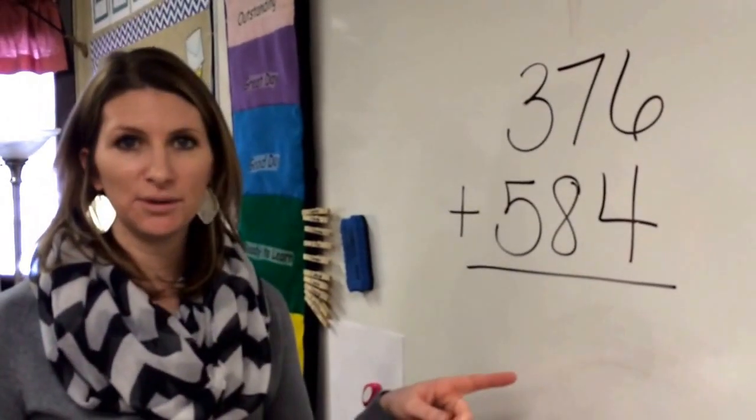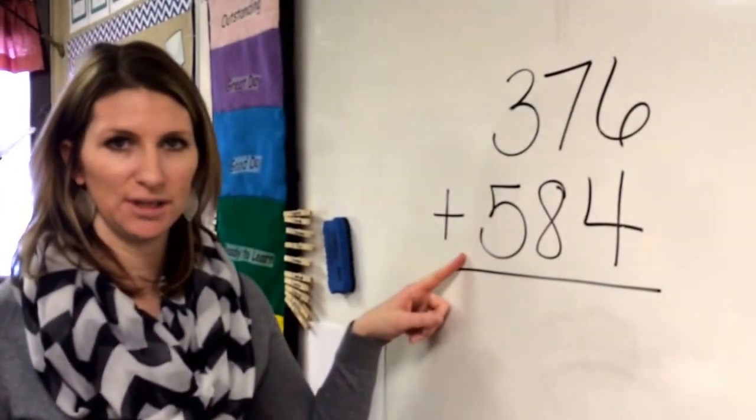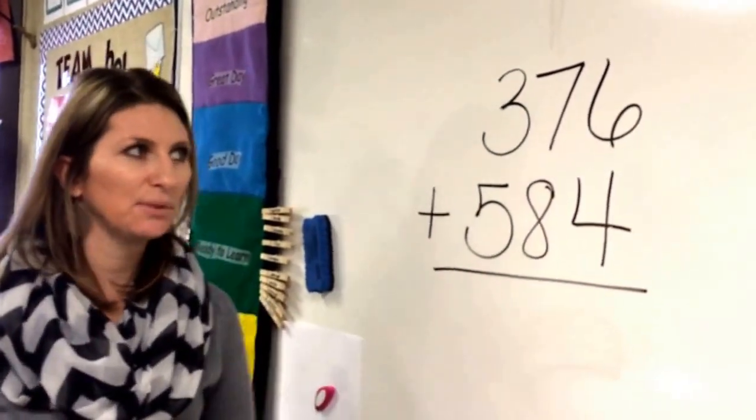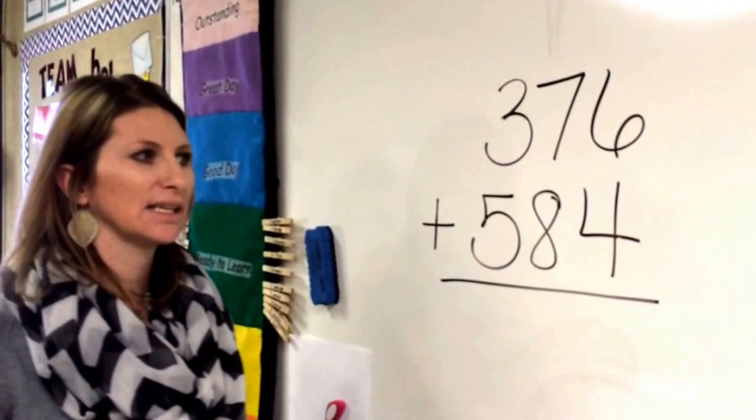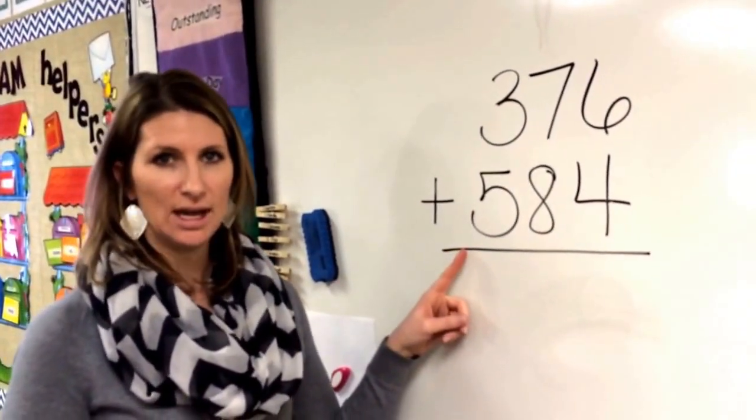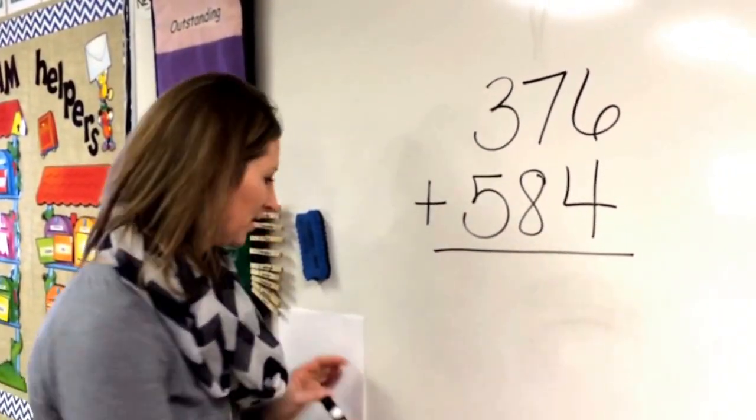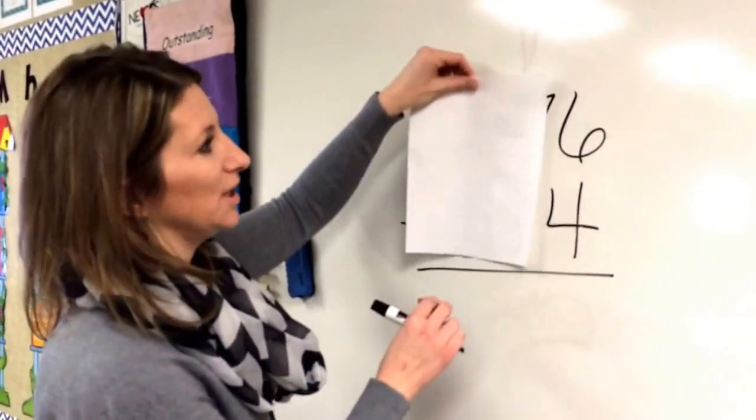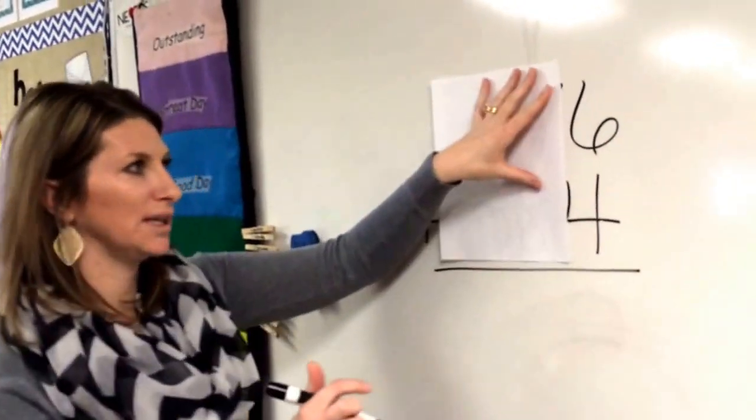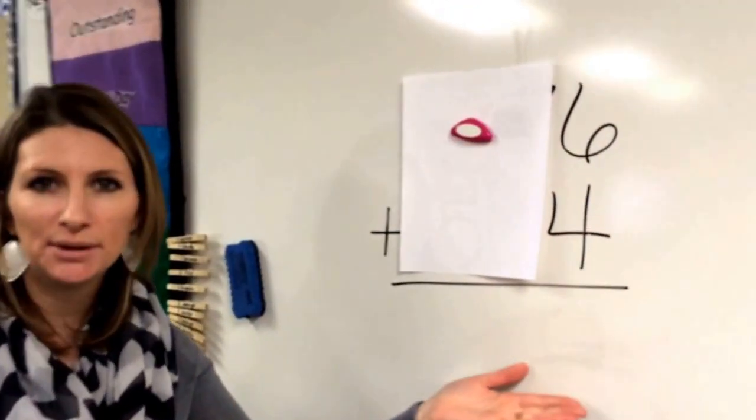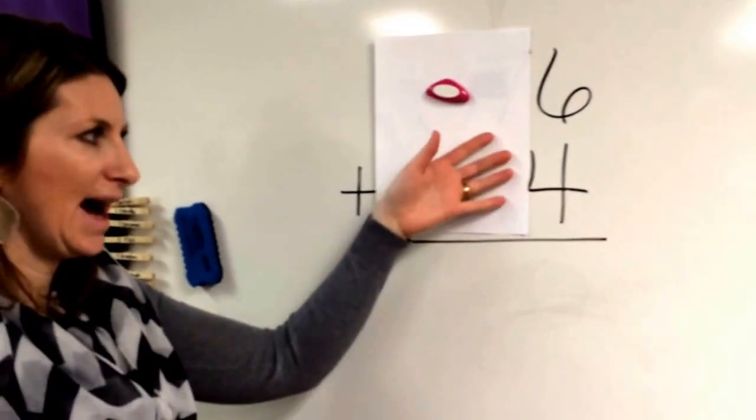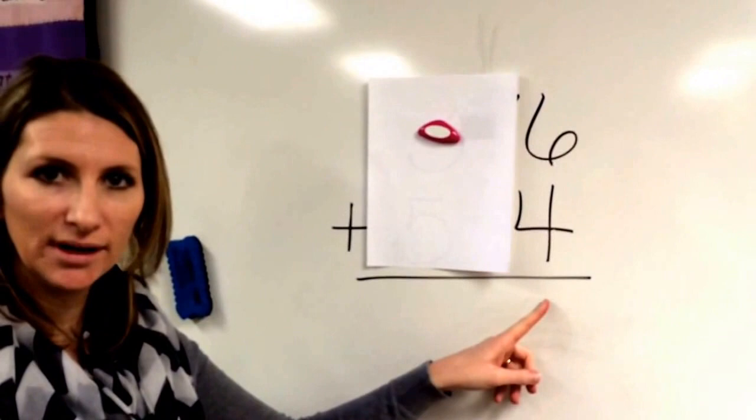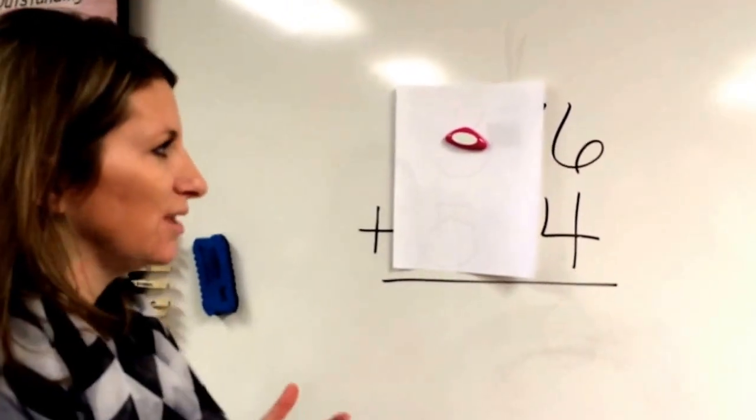Okay so now we're gonna move over to a three-digit plus a three-digit problem. So I have this problem on the board: 376 plus 584. And I don't want you guys to get freaked out here. I want you to think we always start with the ones column. So just focus on the ones column, and then it becomes really simple. We know how to add six plus four in the ones column. So we're just gonna do that first.